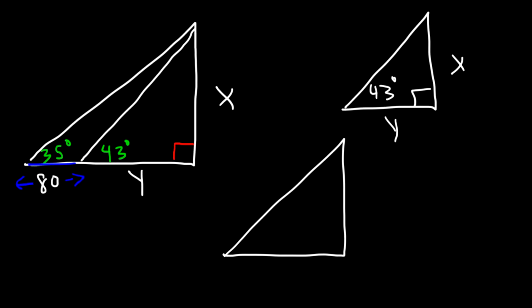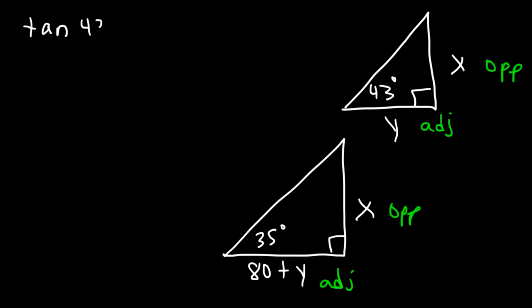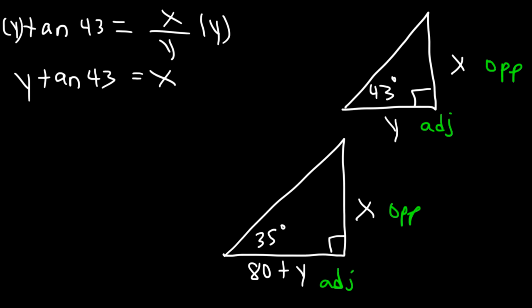For the first (small) triangle: tan(43) = x / y, which means x = y × tan(43). For the second (large) triangle: tan(35) = x / (80 + y). Multiplying both sides by (80 + y) gives (80 + y) × tan(35) = x. Since both expressions equal x, we can set them equal: y × tan(43) = (80 + y) × tan(35).